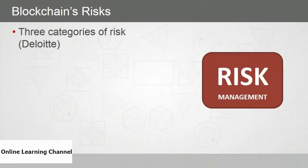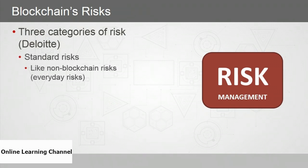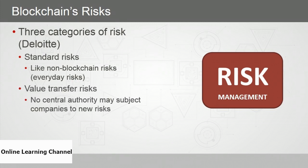Deloitte has identified three categories of risk for companies undertaking a blockchain solution. Standard risks are everyday risks not pertaining specifically to blockchain but still affecting its implementation — for example, tackling a blockchain project without proper expertise. Value transfer risk refers to the core functionality of blockchain, which transfers ownership — whether bitcoin, land deeds, equities, commodities, and so on. In the traditional business model, transfer of ownership was handled by central intermediaries, and blockchain eliminates this need, potentially subjecting companies to new risks.